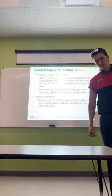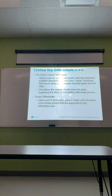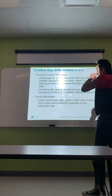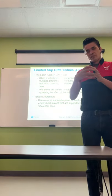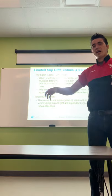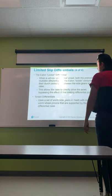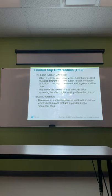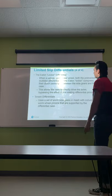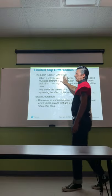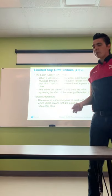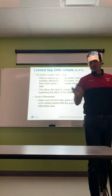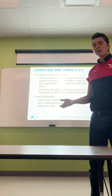The Eaton Locker differential is very popular in off-road because they use air lockers and electric lockers. It essentially locks the side gears and pinion gears all together, transferring power without losing traction. When a vehicle spins a rear wheel, the Eaton Locker compresses its clutch pack between the side gears and the case, allowing the case to directly drive the axle by bypassing the rotating differential pinions. If you want more on how air and electric lockers work, let me know and I can give you an extra lecture.